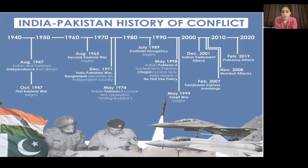After that, the Samjhota Express — a train built to connect families separated during partition — was targeted in 2007 with bombings and blasts. Then in 2008, Lashkar-e-Taiba carried out terrorist attacks on buildings in Mumbai. Around 164 people died in those 2008 Mumbai attacks.